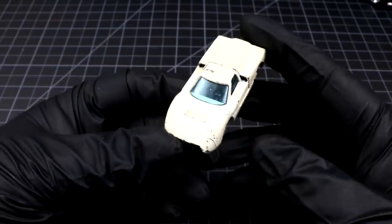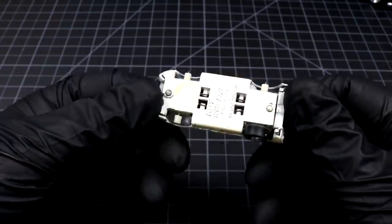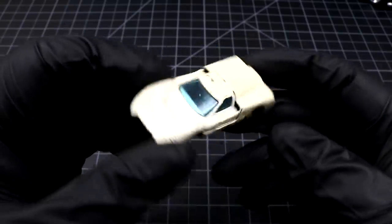Hey, what's up? Welcome back to Diecast Resurrection. Today we are working on a little Ford J car. This would have been a 1968 release in the Sweet 16 collection.